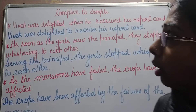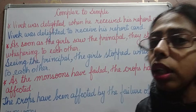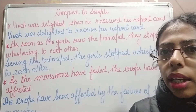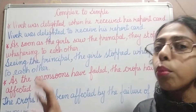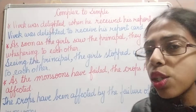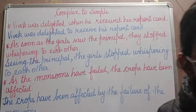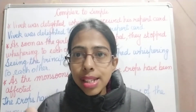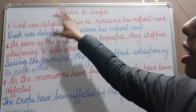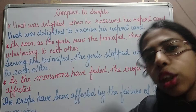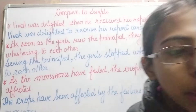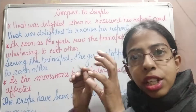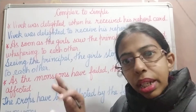Now let us learn how to change a complex sentence into a simple sentence. A complex sentence has one independent clause and one or more dependent clauses. A simple sentence has only one independent clause. A complex sentence is changed into a simple sentence by changing the dependent clause into a phrase — when you change the dependent clause into a phrase, the additional subject and verb are eliminated from it.